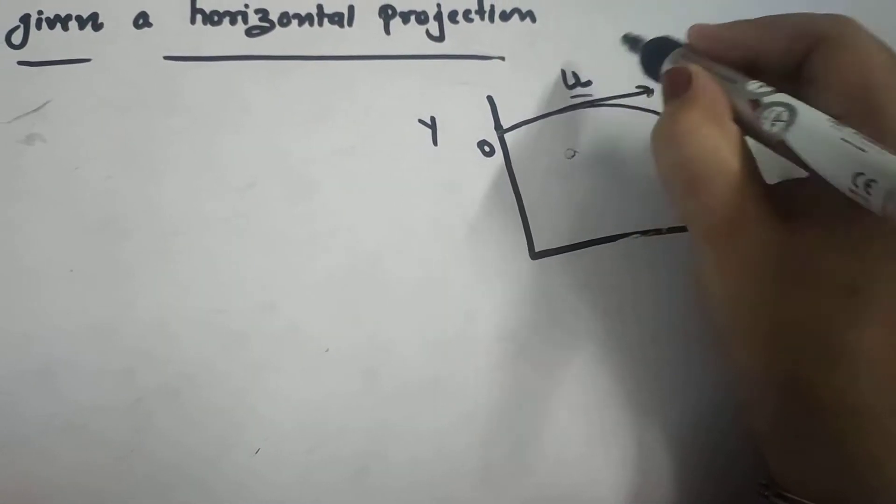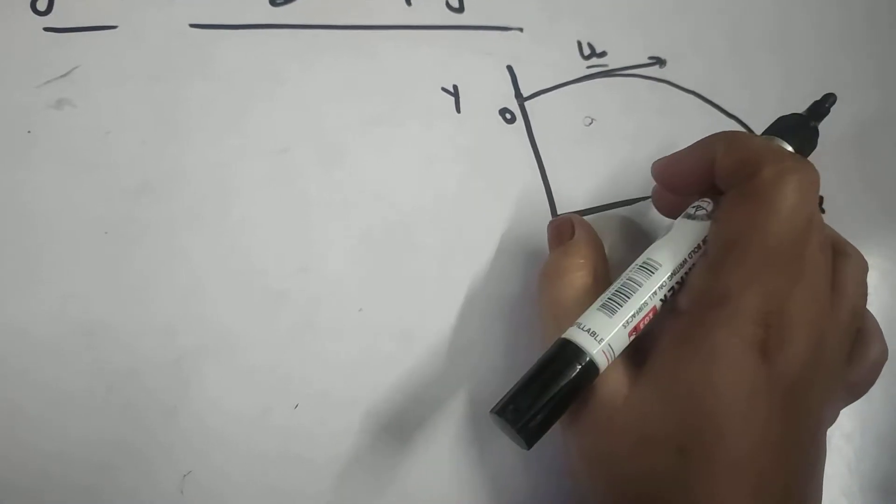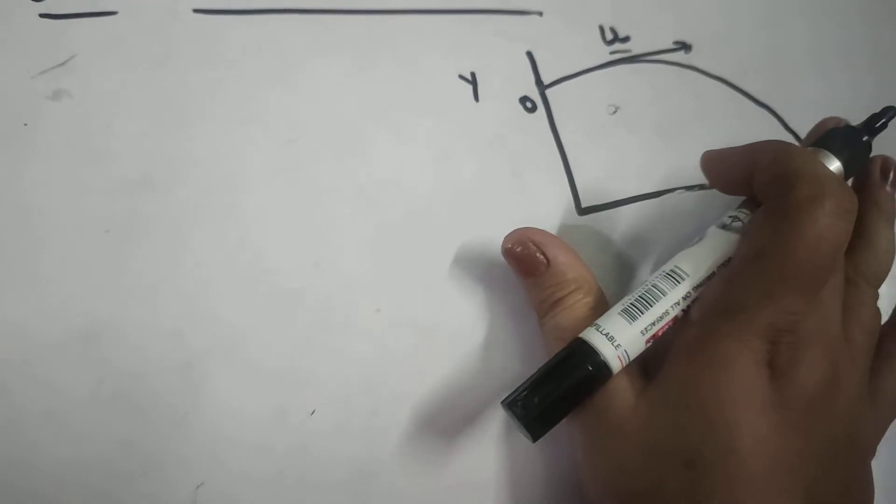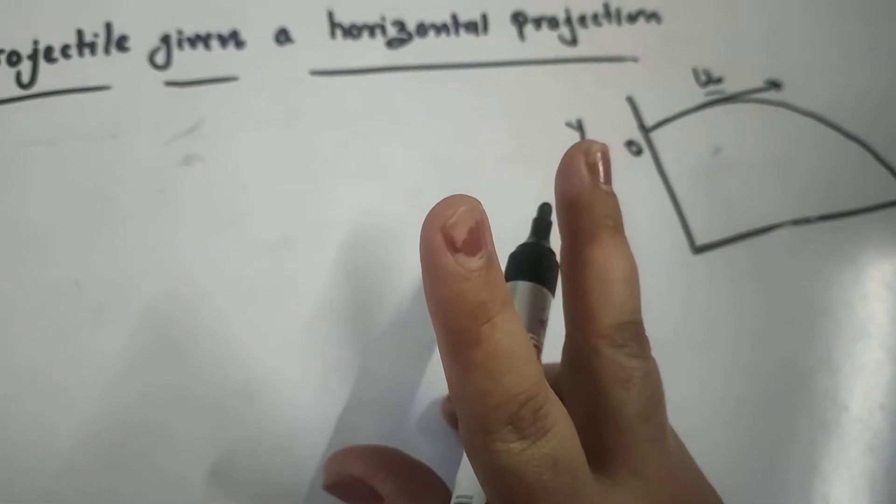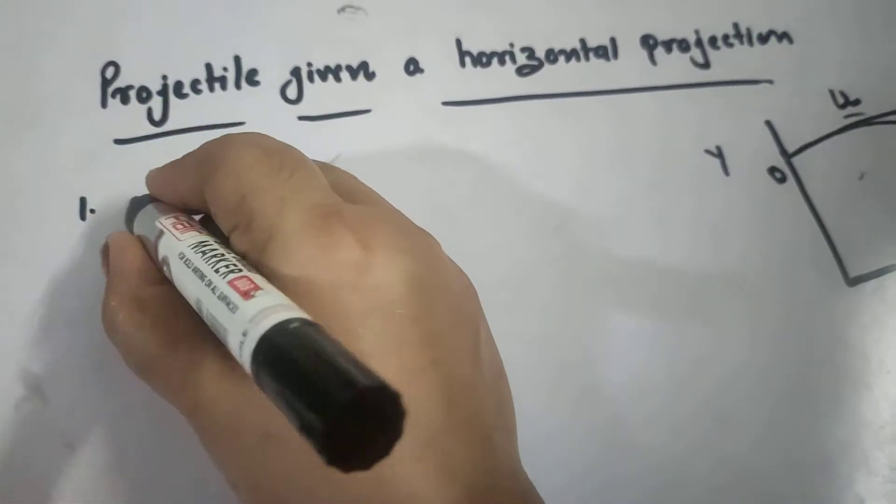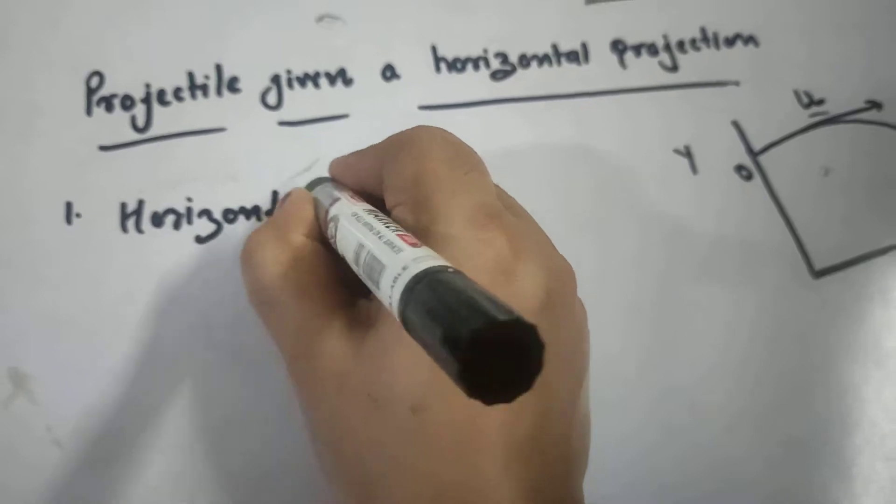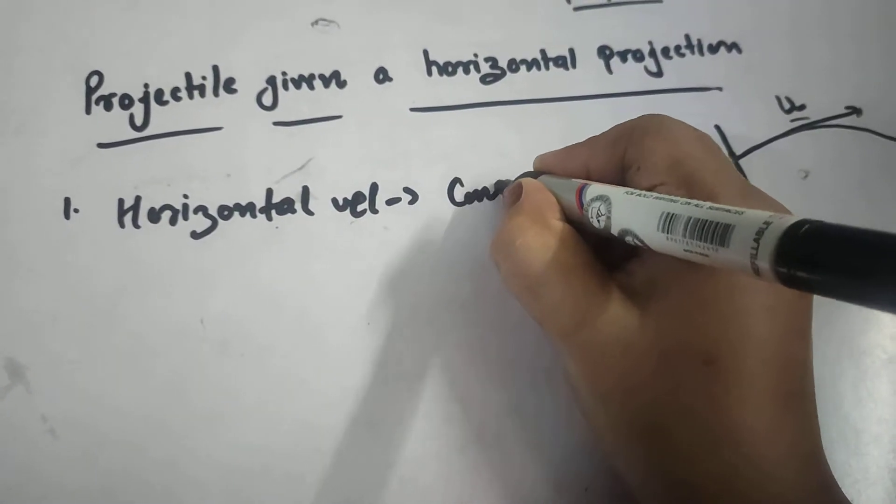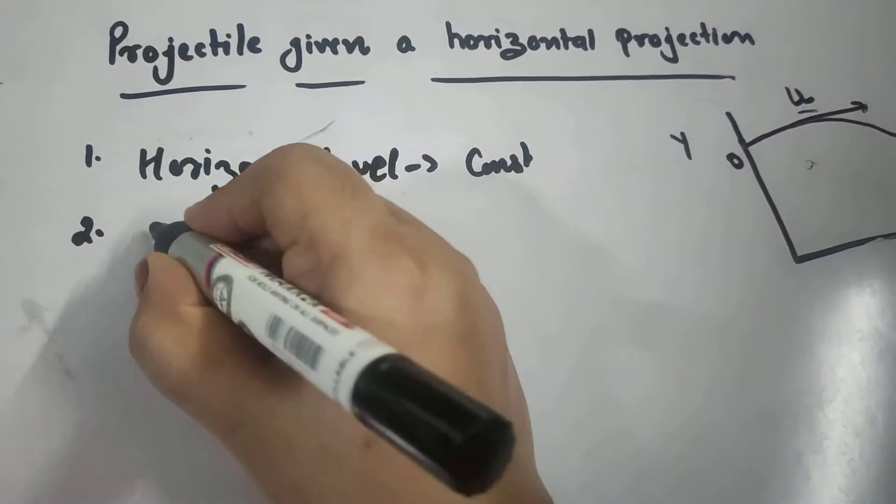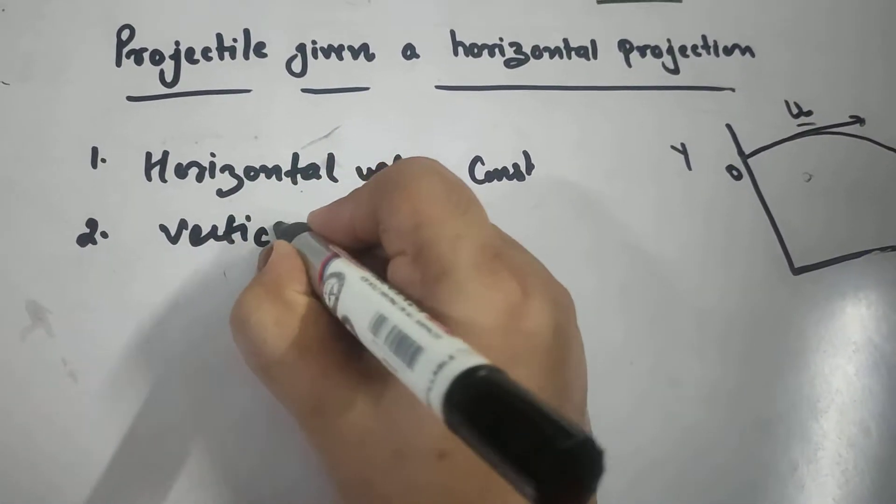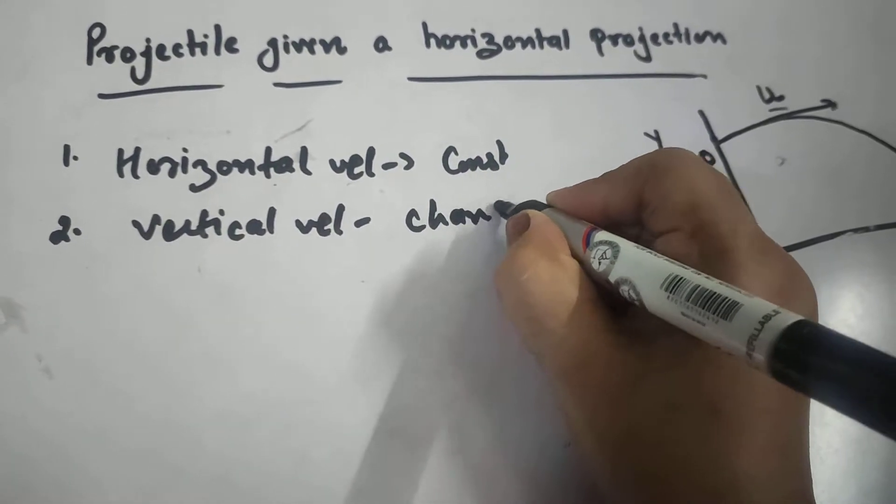Let the initial velocity with which it is projected as U and the vertical changing velocity under the effect of gravity. Now we know that the two velocities are: number one, horizontal velocity which remains constant throughout the motion, and second, the vertical velocity which keeps on changing under the effect of gravity.